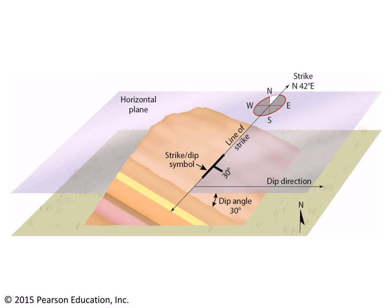In order to determine what sort of structure we have, we need to be able to assess its orientation in space. To do this, we measure two aspects of the rock's orientation: its strike and its dip. The strike is a line that is formed by the intersection of a plane of interest — so in this case, this upper orange block of rock is, say, a bedding plane.